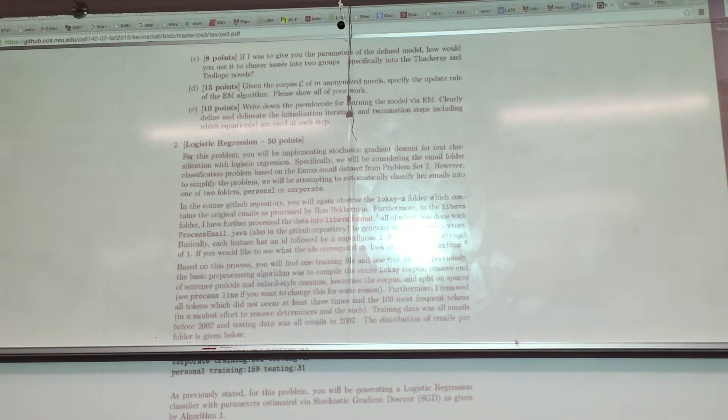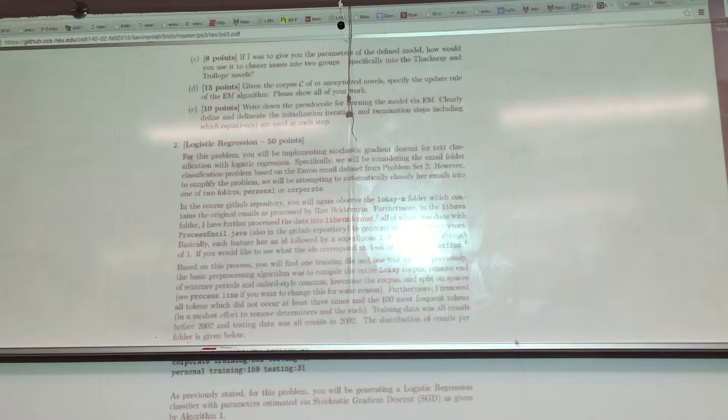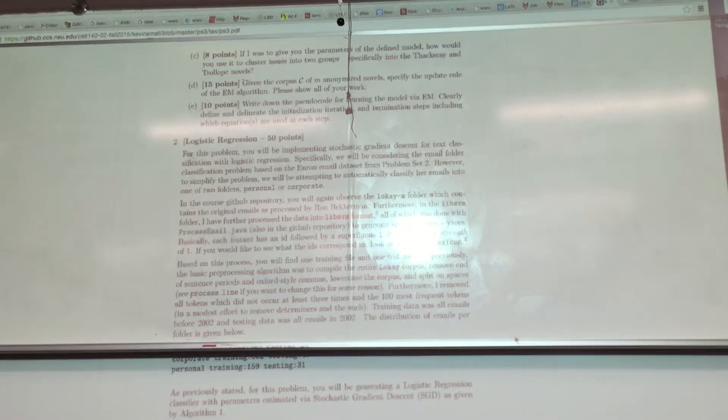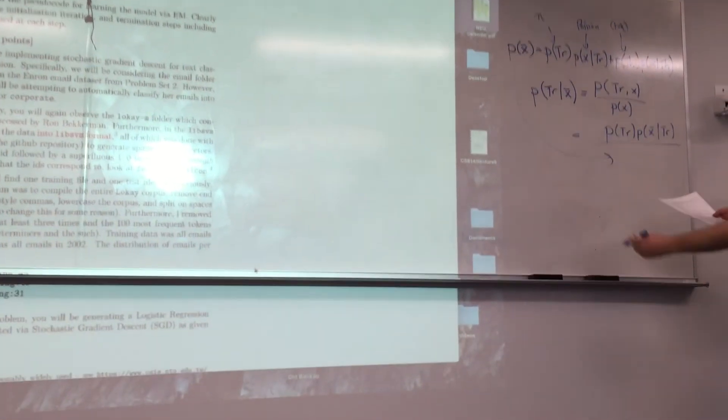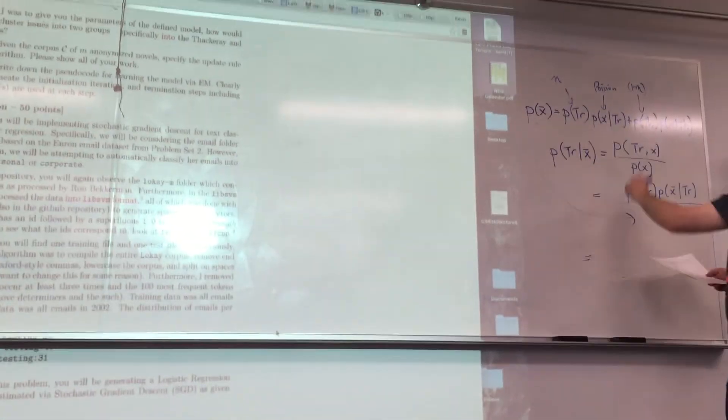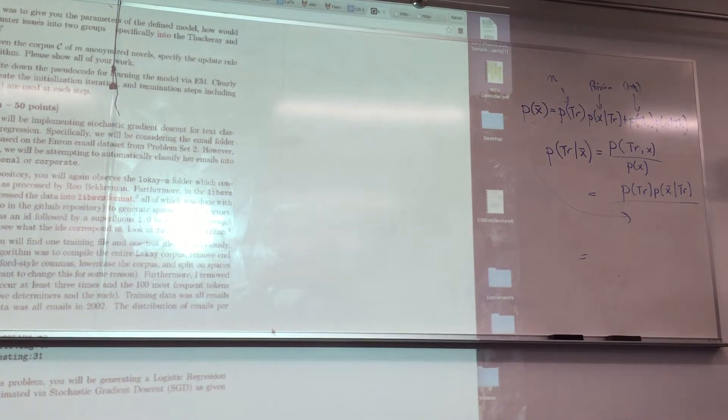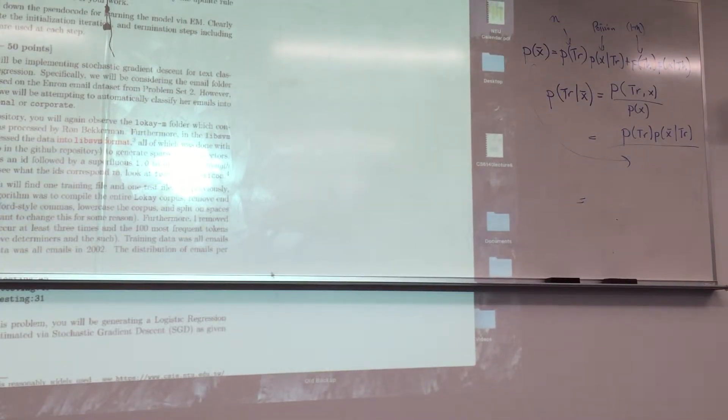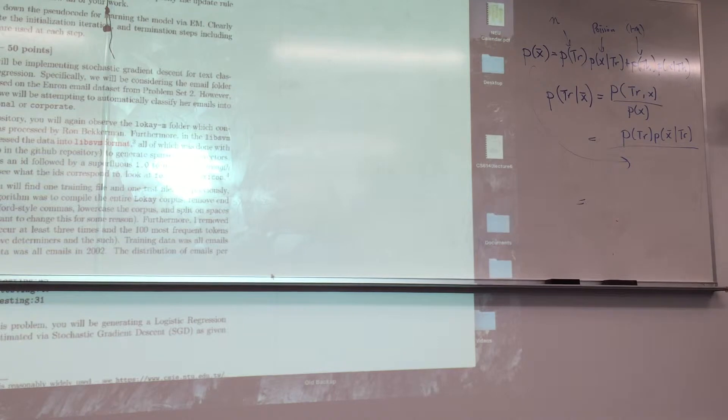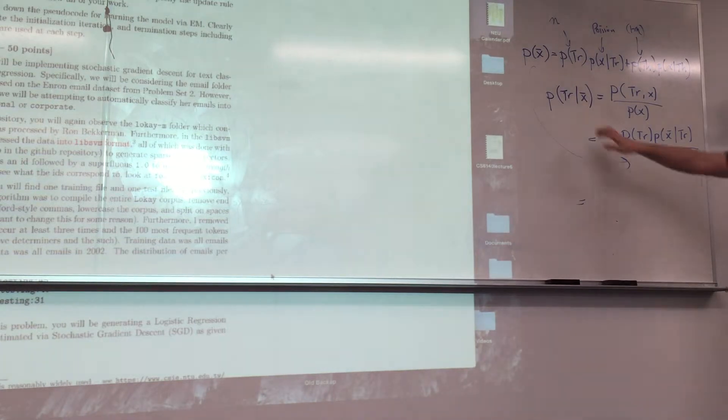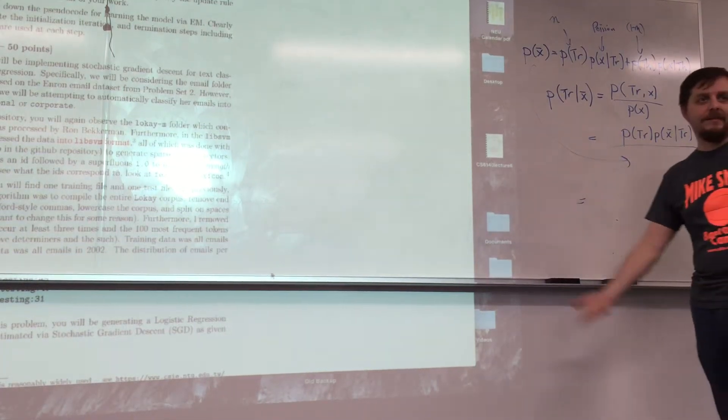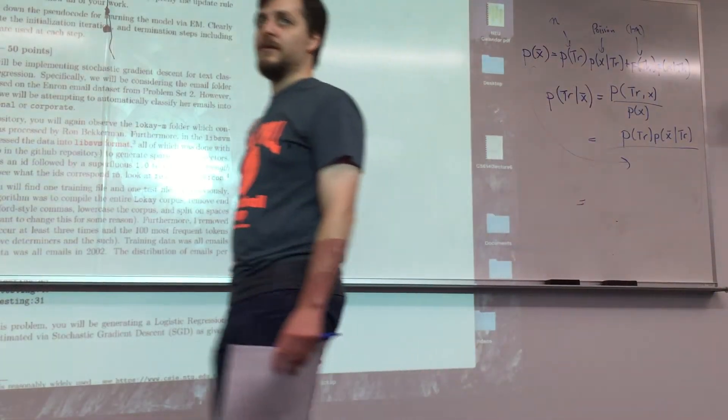And then this here basically. And at that point then you have to fill in the lambdas and etas and everything. And basically there's one of these for Trollope and one of these for Thackeray. That's how you would group it into these two pieces.